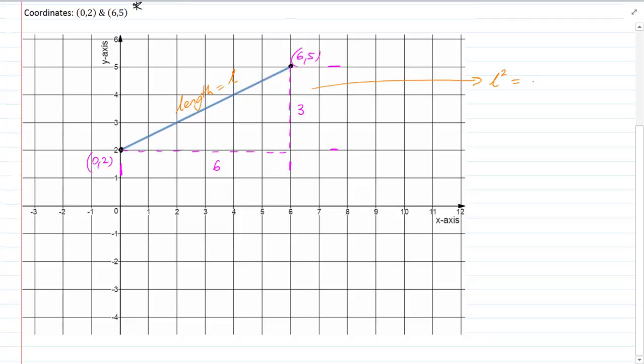L squared is equal to 3 squared plus 6 squared. And if you don't recall why, just remember this formula. C squared equals A squared plus B squared. That's right, Pythagoras theorem.